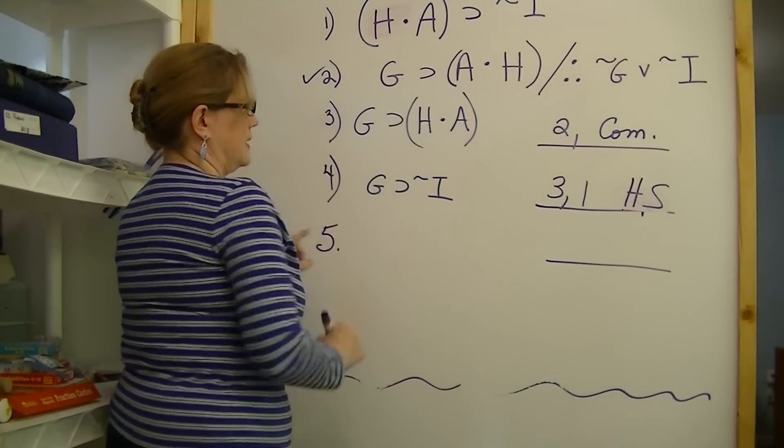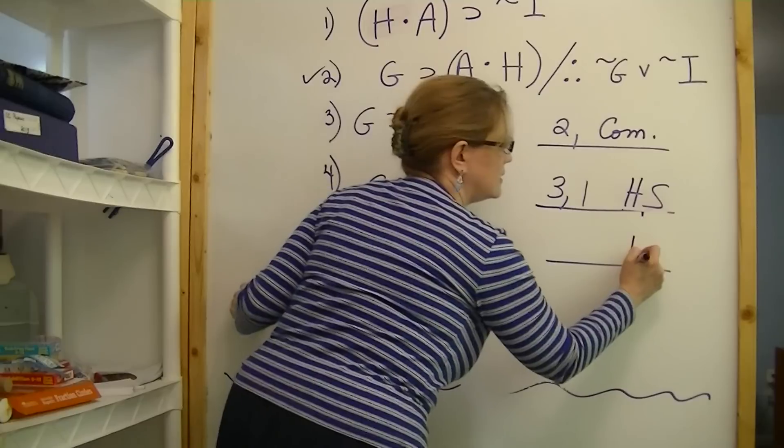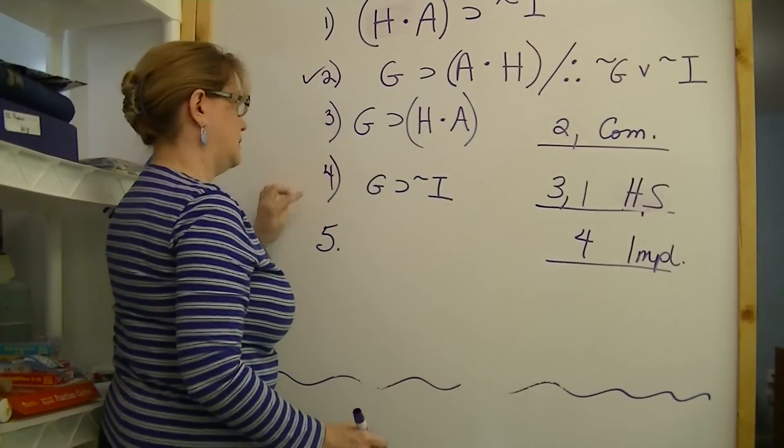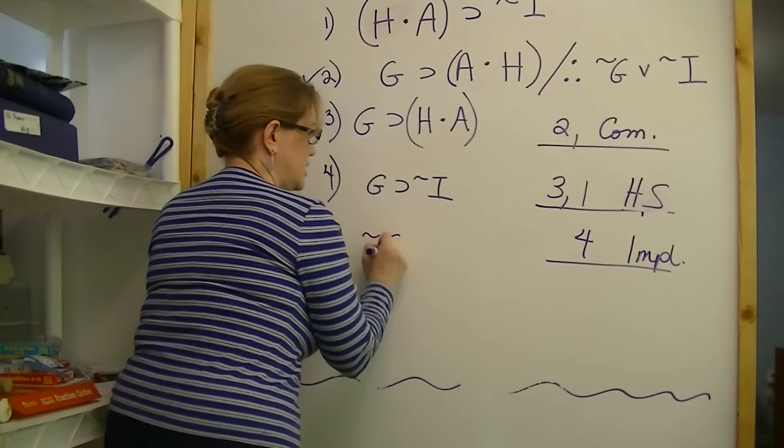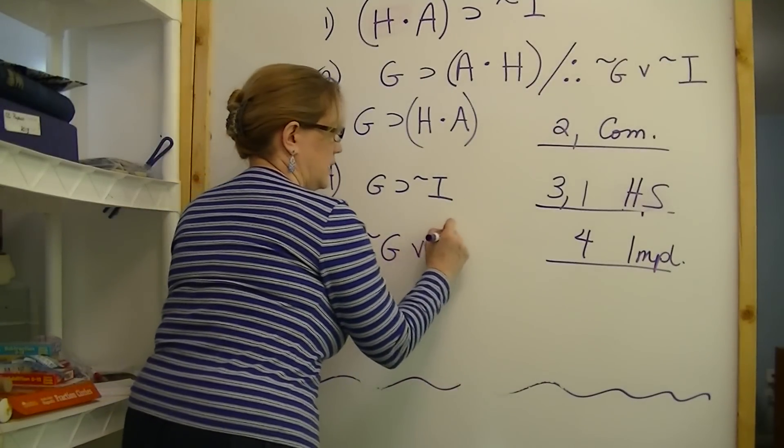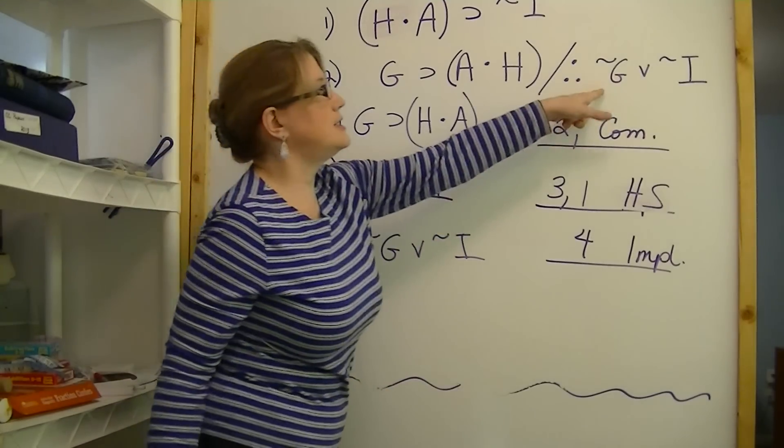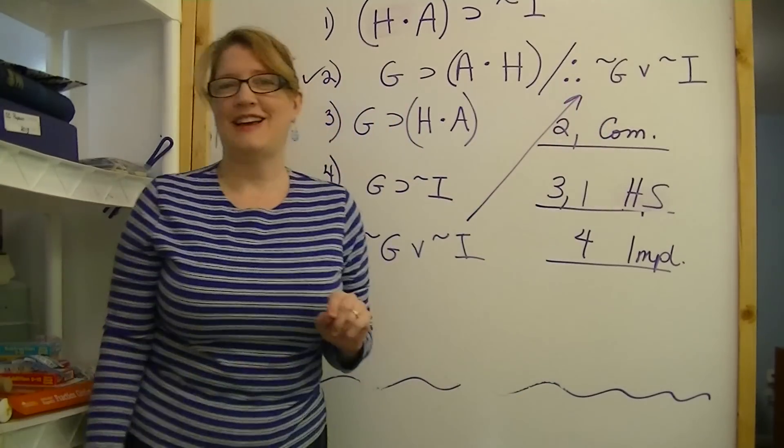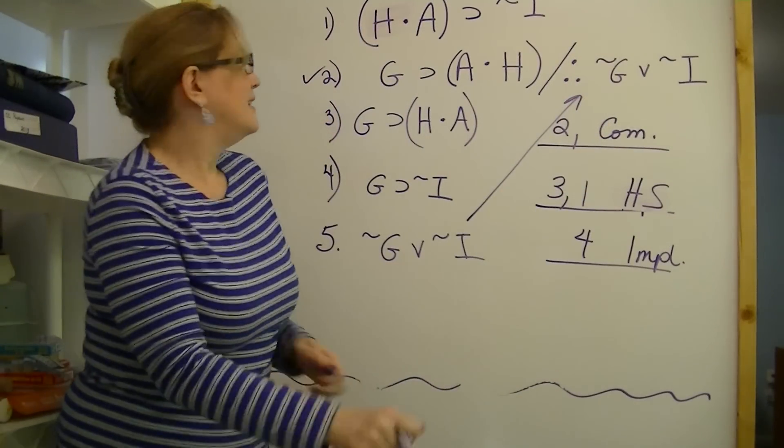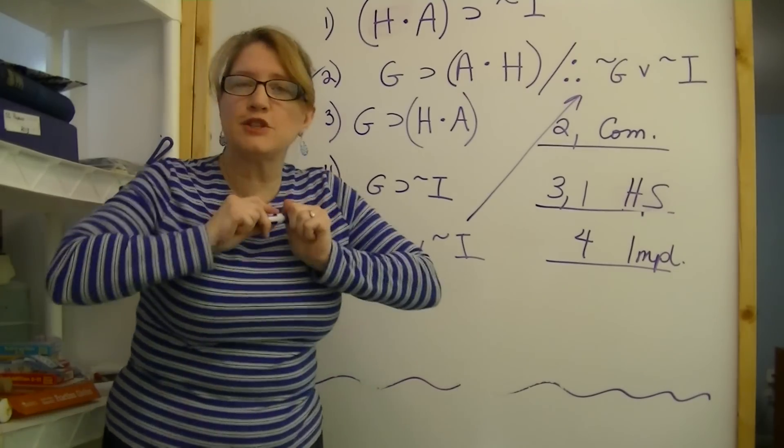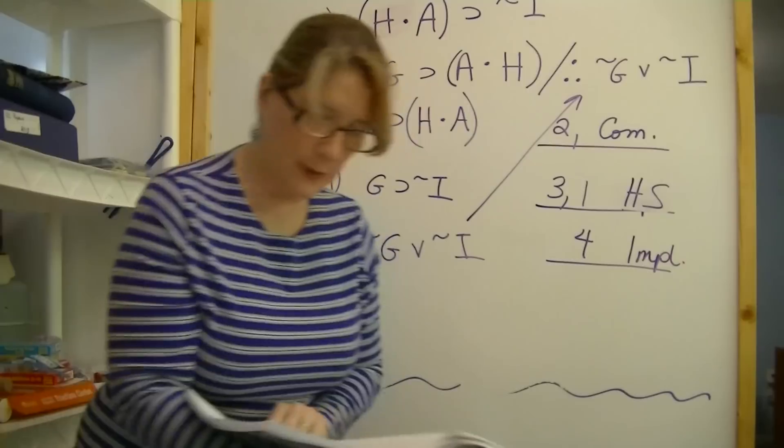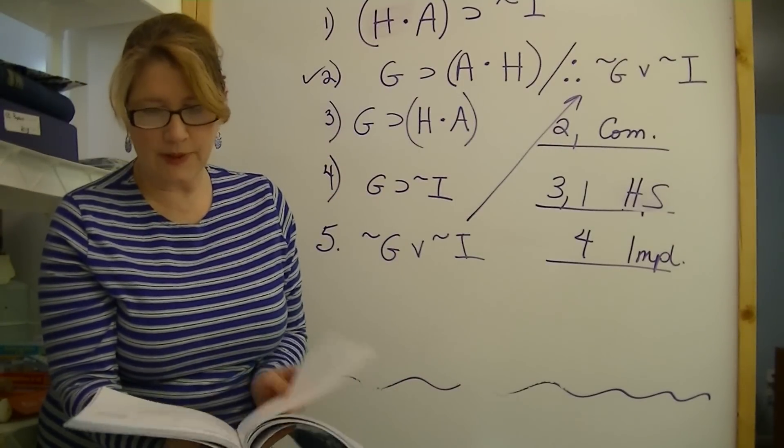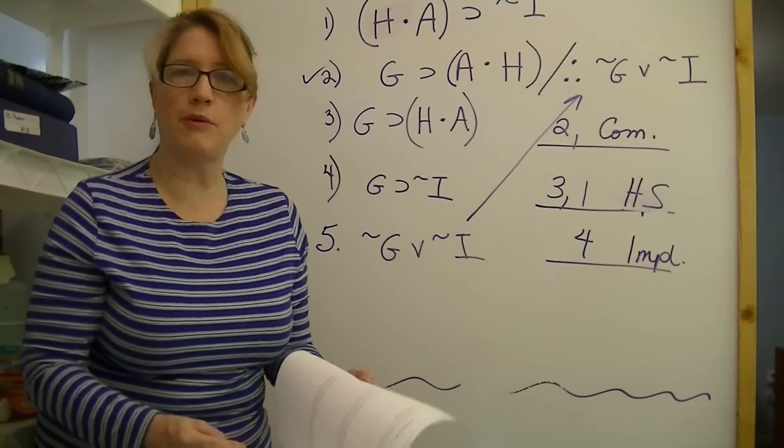So I'm going to change this using implication from line four into not G or not I. You'll notice it matches. So that's basically what you're supposed to do with the last section. There's a couple more here to do. Several more to do. But that gives you how to go about it.